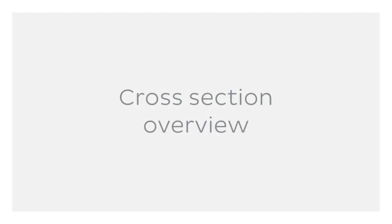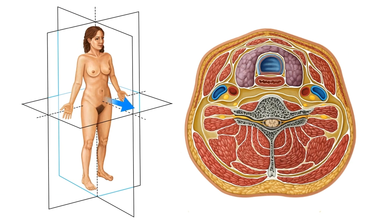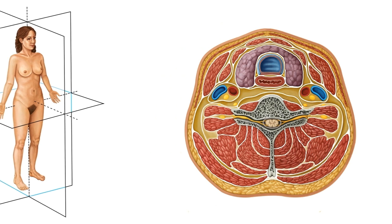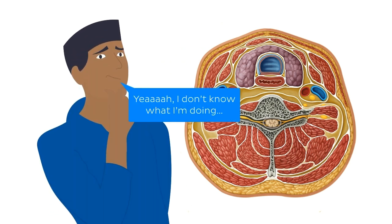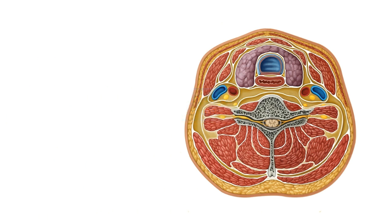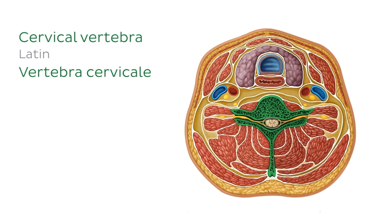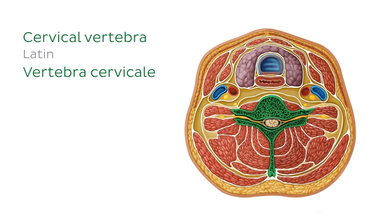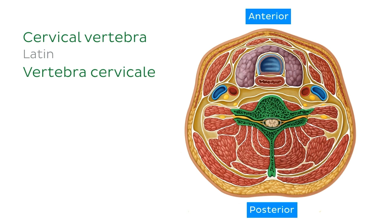Before we get into the juicy stuff, let's take a general overview of the cross-section we're looking at today. We're used to looking at anatomical structures from the anterior, posterior, lateral or medial aspect, so working with a cross-section can feel a bit unfamiliar. First up, right in the middle, we have a cervical vertebra. We can tell this is a cervical vertebra because of its typical bifid spine and the grooves for spinal nerves on the transverse processes. The cervical vertebra also indicates the orientation of this transverse section — the vertebral spine projects posteriorly and the vertebral body faces anteriorly, which means the anterior aspect of the neck is at the top of the image and the posterior aspect is at the bottom.